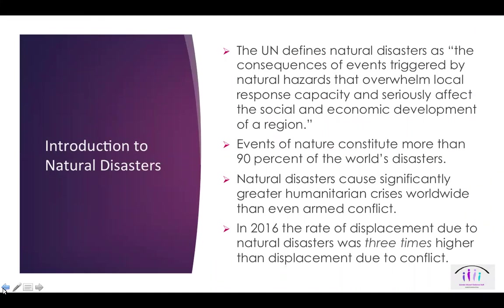The UN defines natural disasters as the consequences of events triggered by natural hazards that overwhelm local response capacity and seriously affect the social and economic development of a region. To constitute a natural disaster, an incident must directly impact the safety, health, and well-being of humans to such extent that governments and communities can't adequately meet the needs of those affected. Disasters that occur suddenly are often referred to as sudden onset — including earthquakes, tsunamis, floods, cyclones, and volcanic eruptions — while disasters that evolve more gradually, such as droughts, are referred to as slow onset. Notably, these natural events constitute more than 90% of the world's disasters.